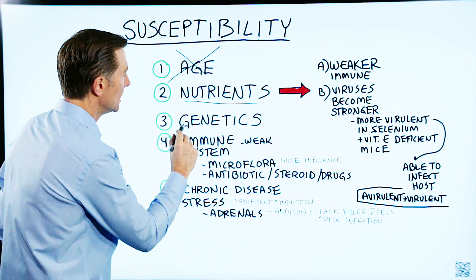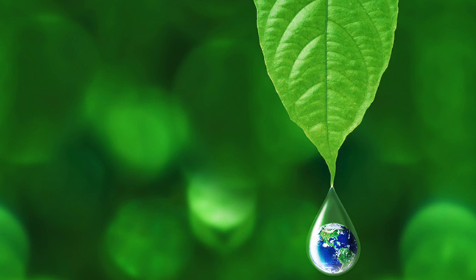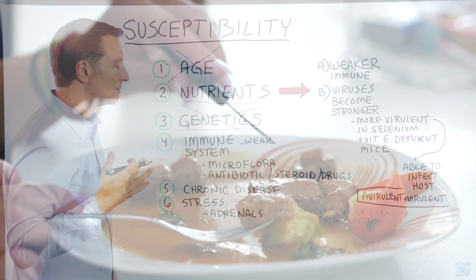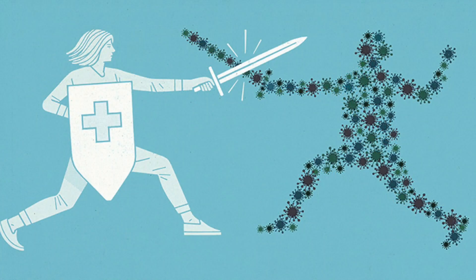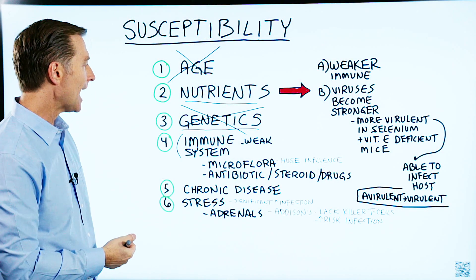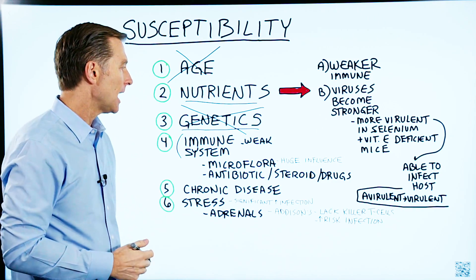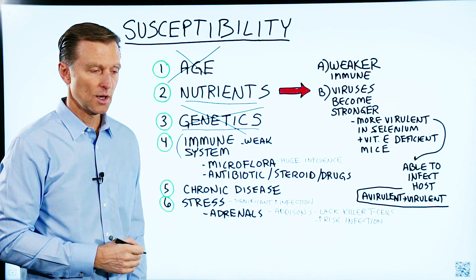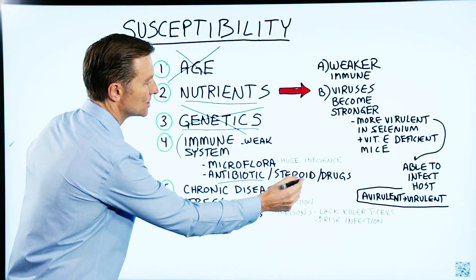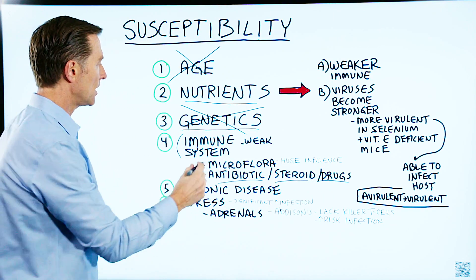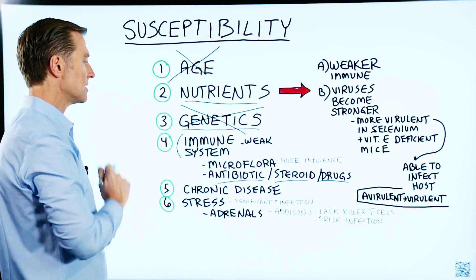Third, genetics. You can't do much about your genes, but you can do a lot about epigenetics — your environment, stress, nutrition, and what you eat. Fourth, the health of your immune system. If your immune system is weak, you're more susceptible to getting a virus and having it create more destruction. The microflora in your digestive system has a huge influence on your immune system. When you take antibiotics or sterilize the body, you greatly increase the chance of infections. Antibiotics, steroids, drugs, and chemotherapy all break down your immune system. Also, having a preexisting chronic disease makes you susceptible.